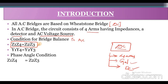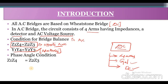Simply remember this as opposite arm impedance multiplication: Z1·Z4 = Z2·Z3. If you want to write the bridge balancing equation in terms of admittances, it is modified as Y1·Y4 = Y2·Y3. Similarly, in case of DC Bridges, the bridge balancing condition is R = (P/Q)·S.